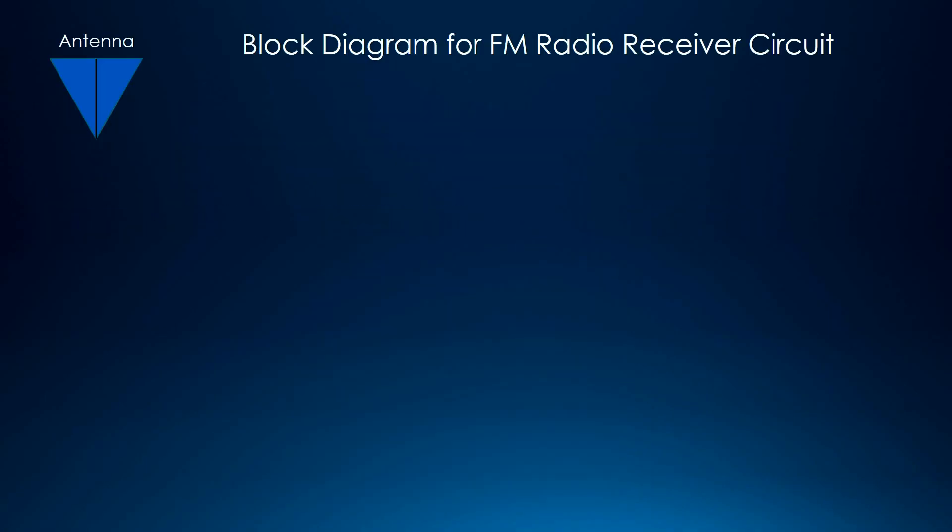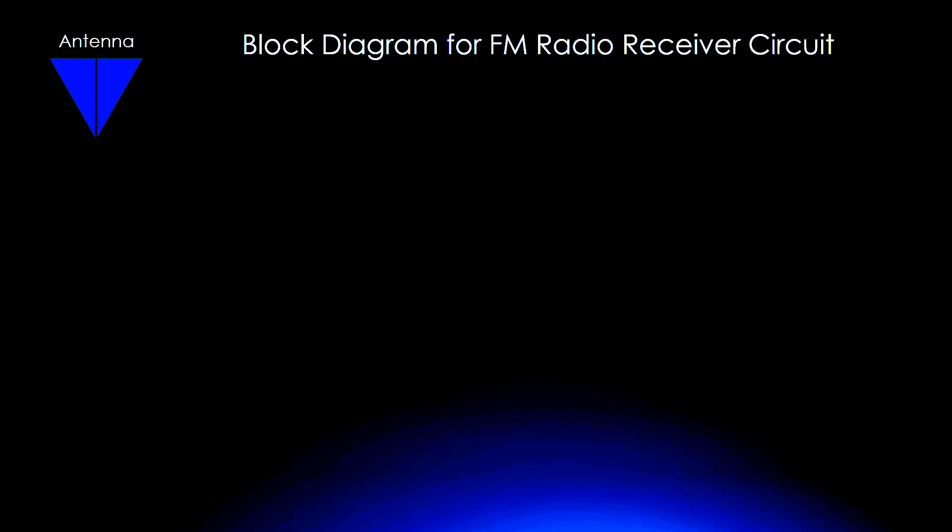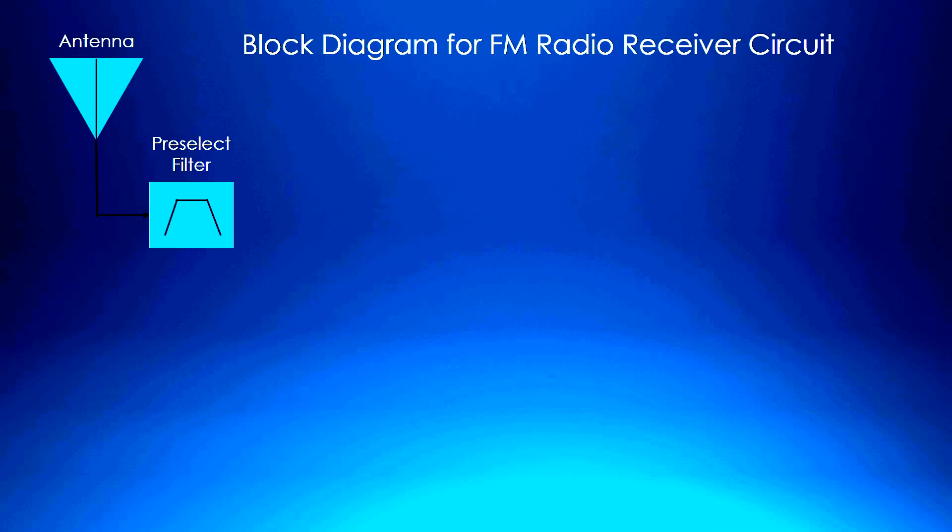Now we will see the block diagram for FM radio receiver circuit. First we have the antenna. Antenna taps the signals that are present in the space around it and passes them to the circuit. The next is the pre-select filter. This part of the receiver circuit helps in removing the FM part from the input signal and discard the rest of it. It then further sends only the FM part for processing.